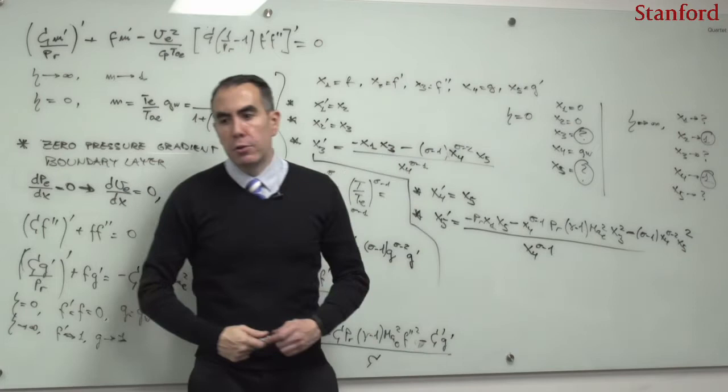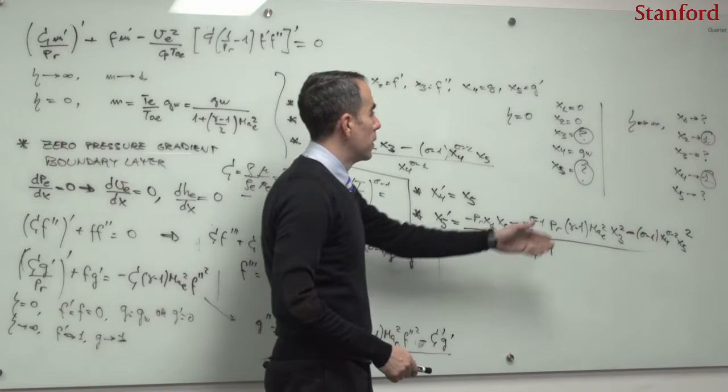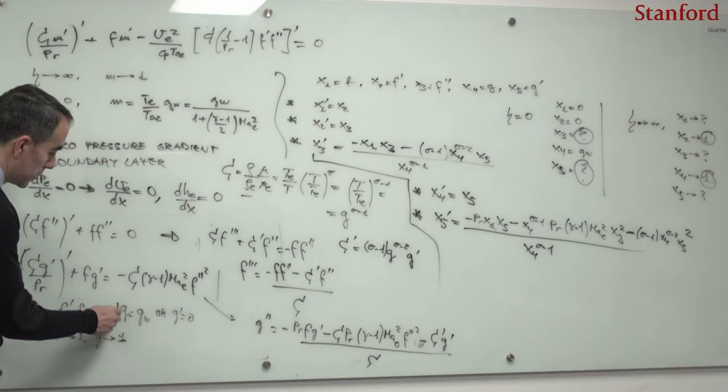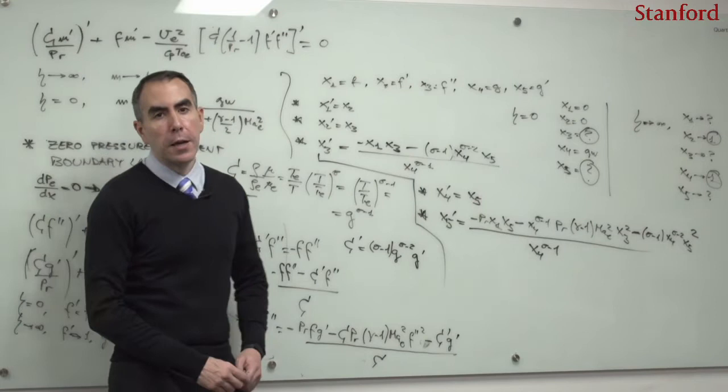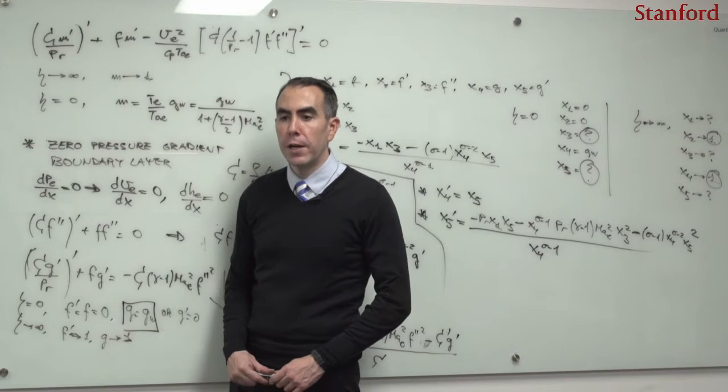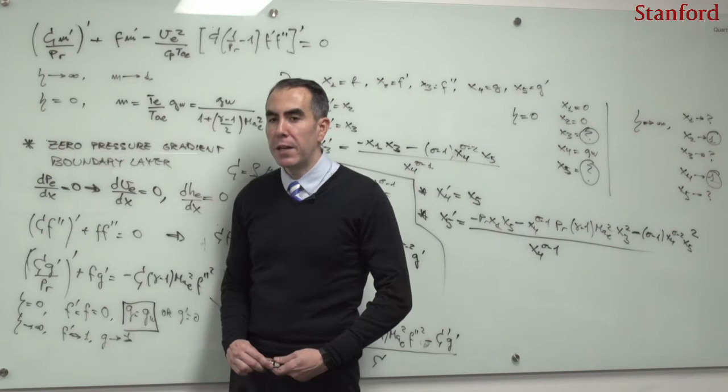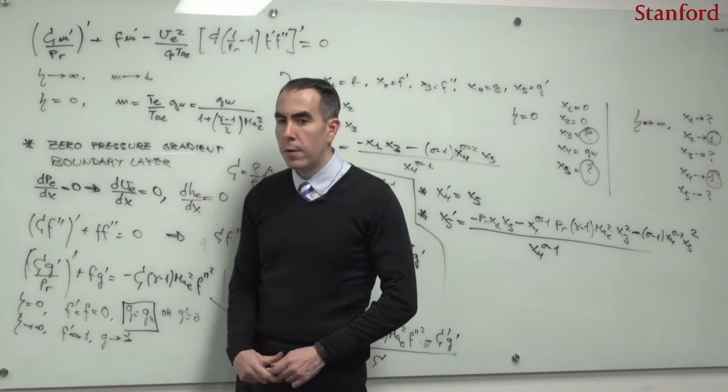For this problem to be globally self-similar, not only must the edge conditions be uniform, but the wall temperature g_w must also be uniform. One can also formulate a self-similar problem with variable wall temperature, but the streamwise variation of wall temperature must be slow — much smaller than (T_e - T_w) divided by the boundary layer thickness.